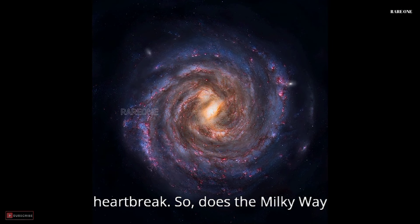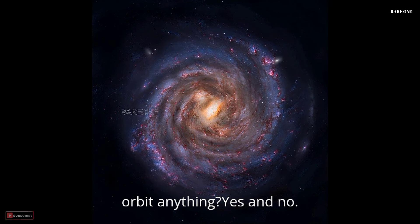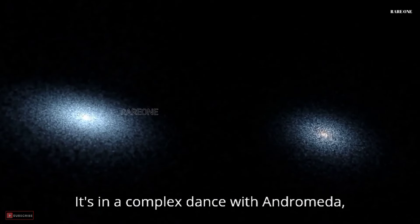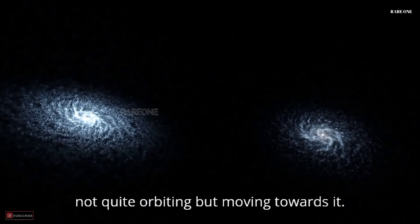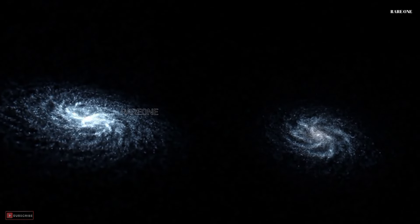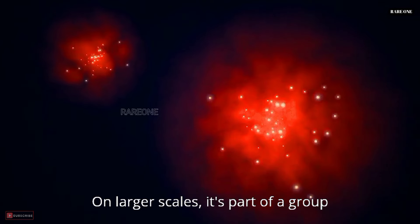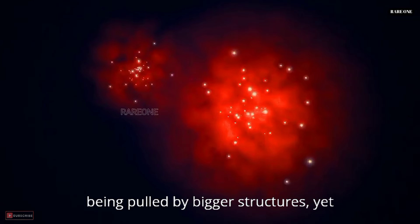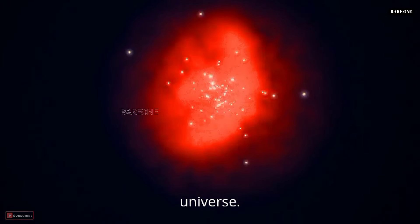So, does the Milky Way orbit anything? Yes and no. It's in a complex dance with Andromeda, not quite orbiting but moving towards it. On larger scales, it's part of a group being pulled by bigger structures, yet also being whisked away by the expanding universe.